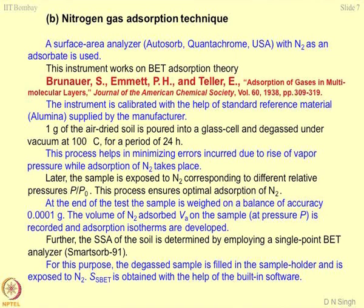At the end of the test, the sample is weighed on a balance of accuracy 0.1 milligram, and the volume of nitrogen adsorbed VA on the sample corresponding to a pressure is recorded and adsorption isotherms are developed. An adsorption isotherm represents the adsorption response at a given temperature — it corresponds to the response of the system at certain ambient conditions. That is why we use terms like adsorption isotherms, gas isotherms, and chemical isotherms.